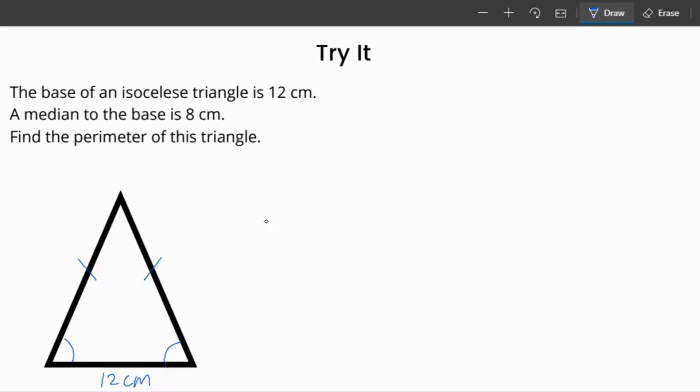A median to the base is 8 centimeters. A median is a straight line. And for an isosceles triangle, it's the same as the altitude and the same as angle bisector. So now it bisects this angle into two equal angles. It lands at 90 degrees, and it also cuts the base in half. And this is 8 centimeters.